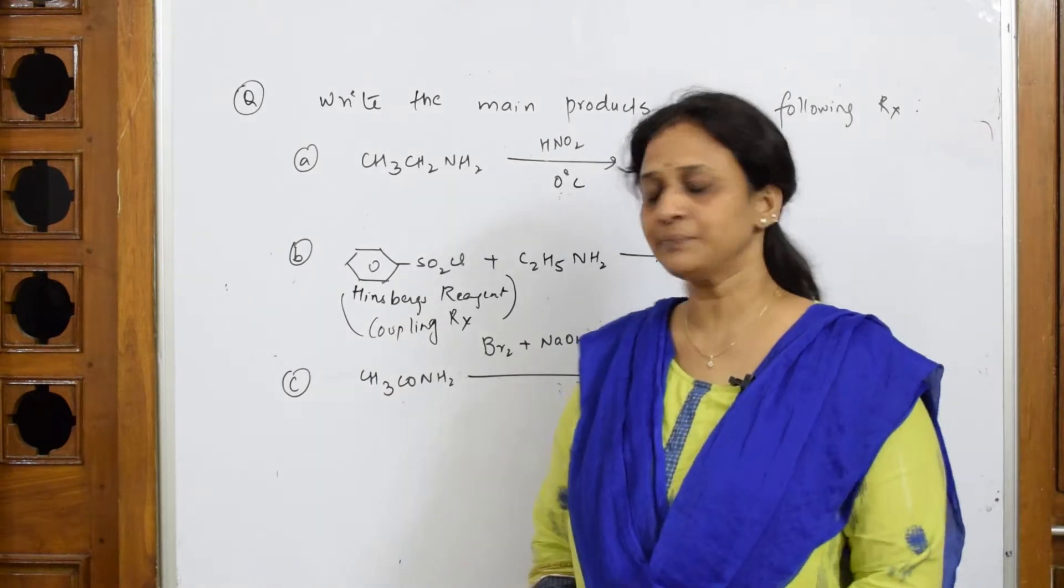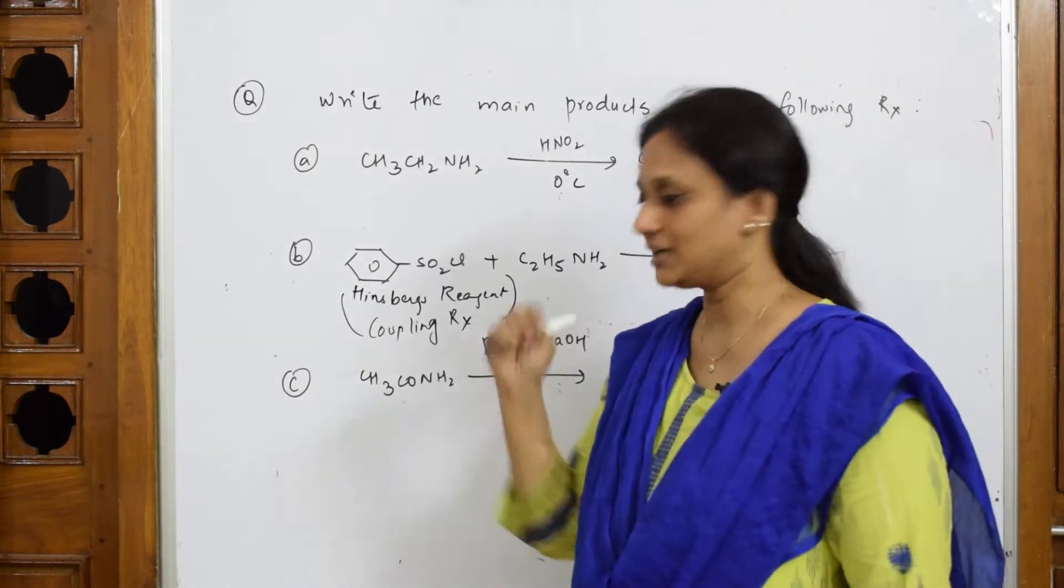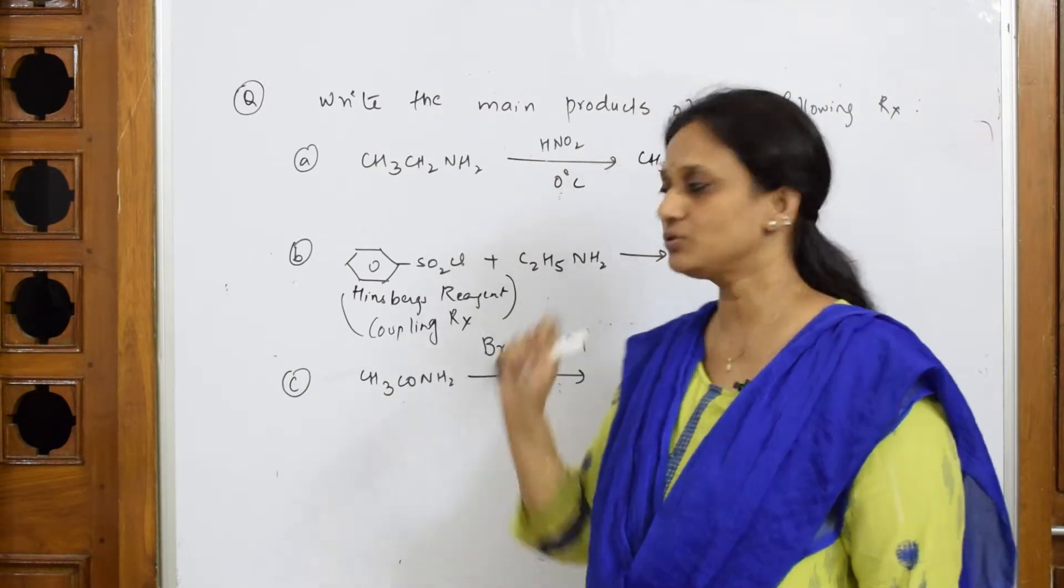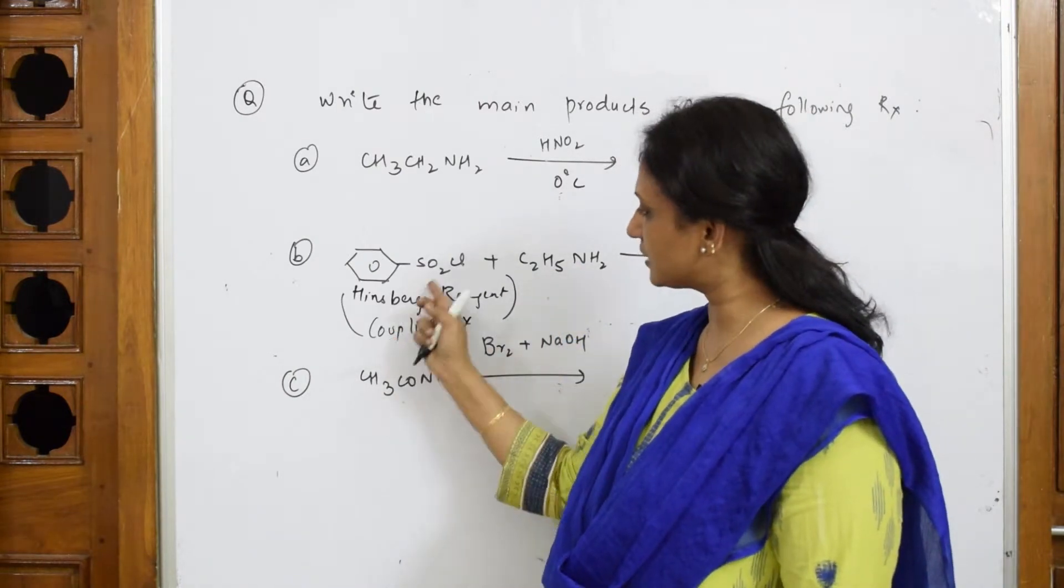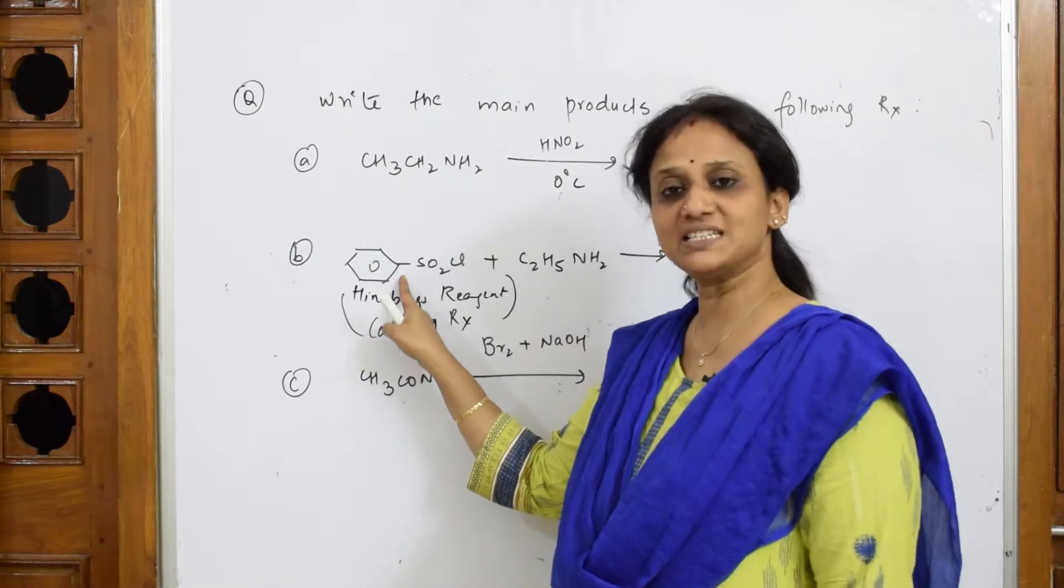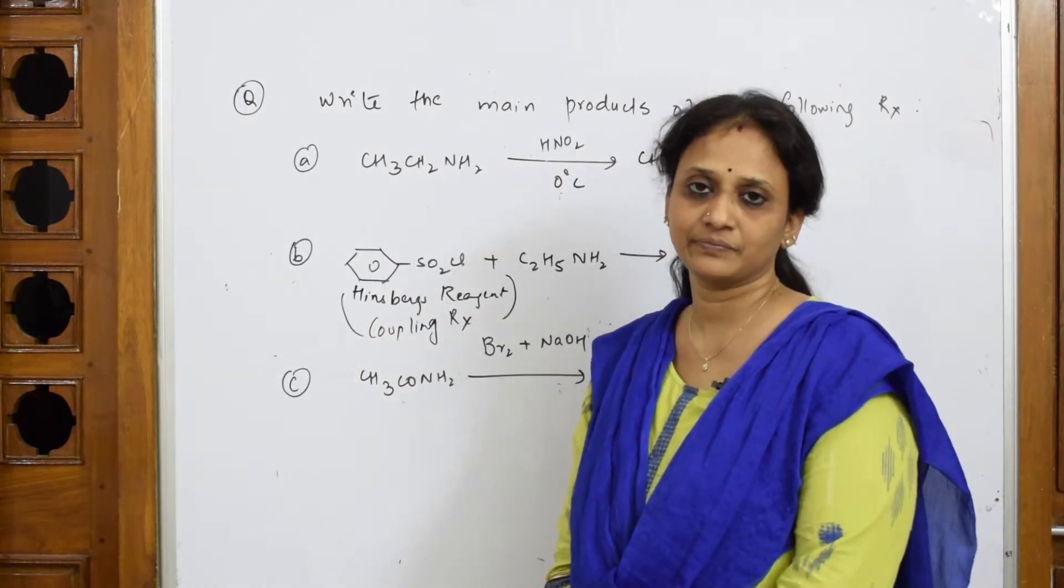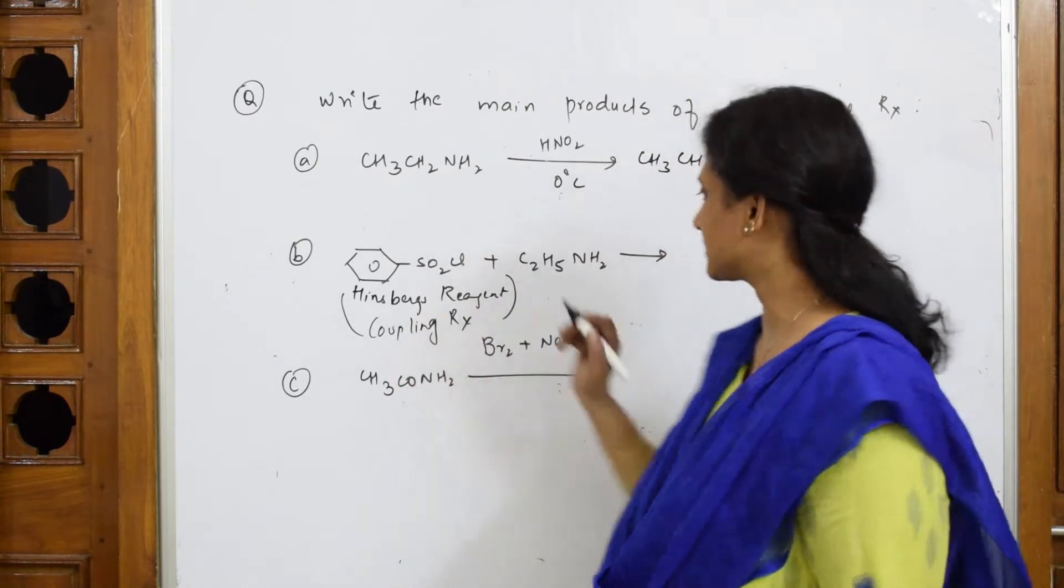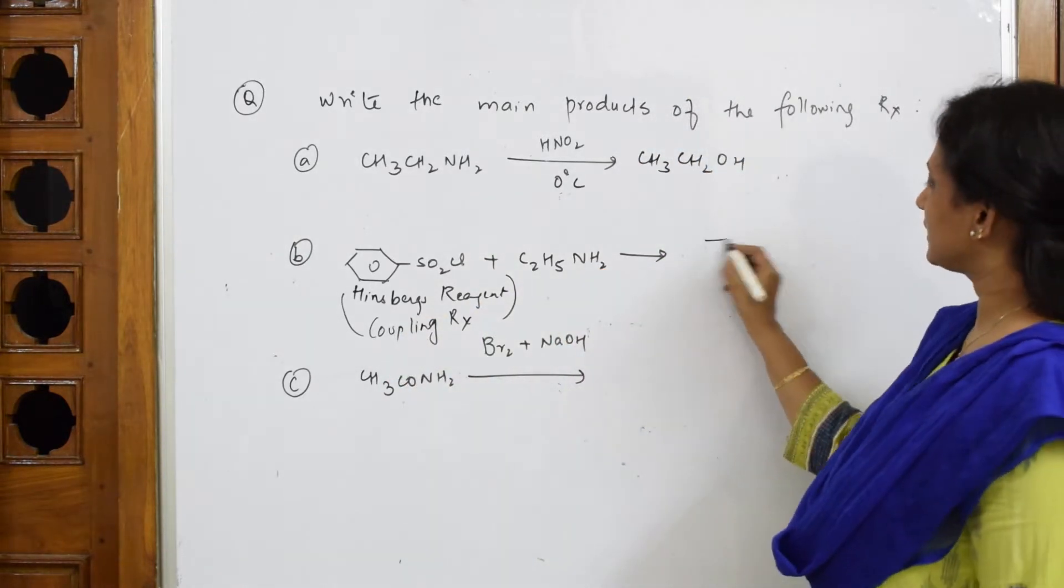Then suppose in the exam if you're not able to write the product, at least if you write this coupling reaction, half mark will be given to you. Please remember, Hinsberg reagent is C6H5SO2Cl, sulfonyl chloride, benzene sulfonyl chloride. So let us come back. What product did I say? Let us write the reaction.